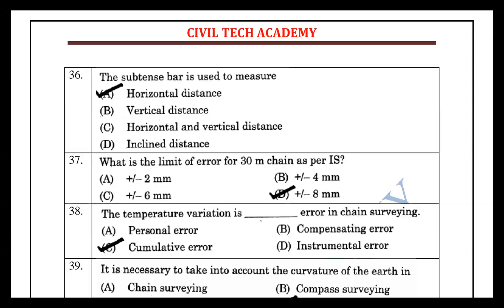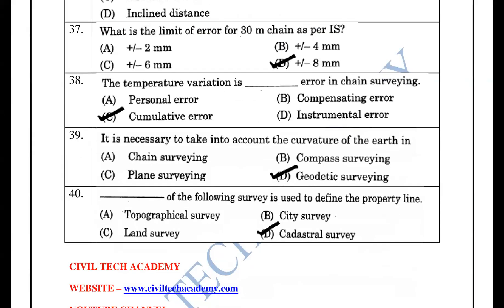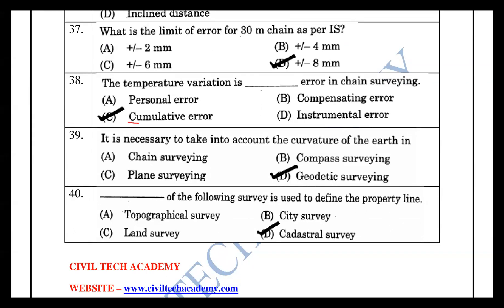Temperature variation causes a cumulative and systematic error in chain surveying. This error is directly proportional to the length of the chain being measured.